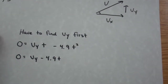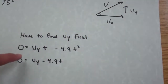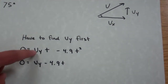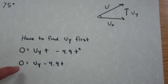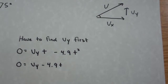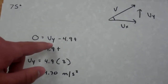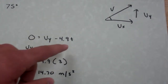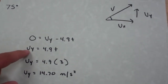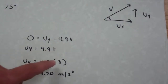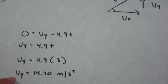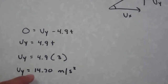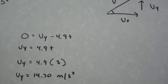We are now on the 75 degree angle, so we have to find Vy first again. 0 equals velocity times time minus 4.9t squared, so Vy minus 4.9t equals 0. We get Vy equaling 4.9t. Vy equals 4.9 times 3 seconds, because that was the time, so we get a vertical velocity of 14.7 meters per second.